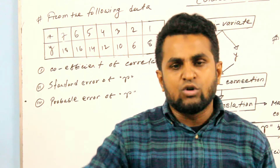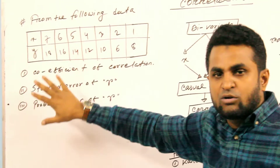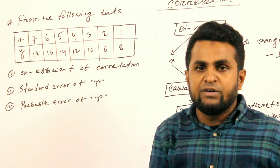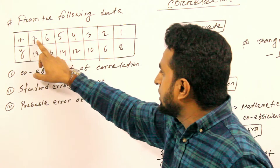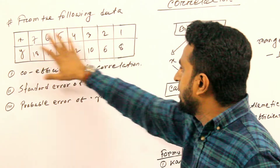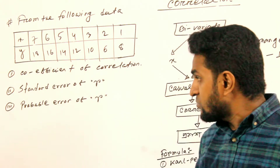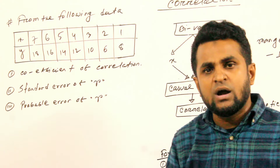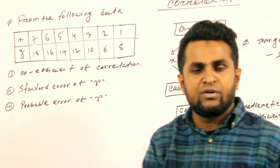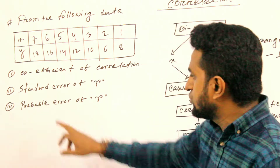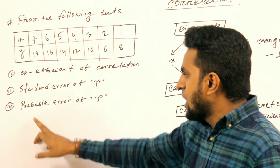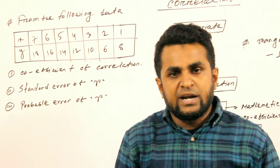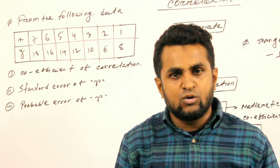This is the basic information. From this, we have to study further. We will use the following data. The data is given. This involves approximation associated with the coefficient of correlation — the Karl Pearson formula — along with the standard error of R and the probable error of R.